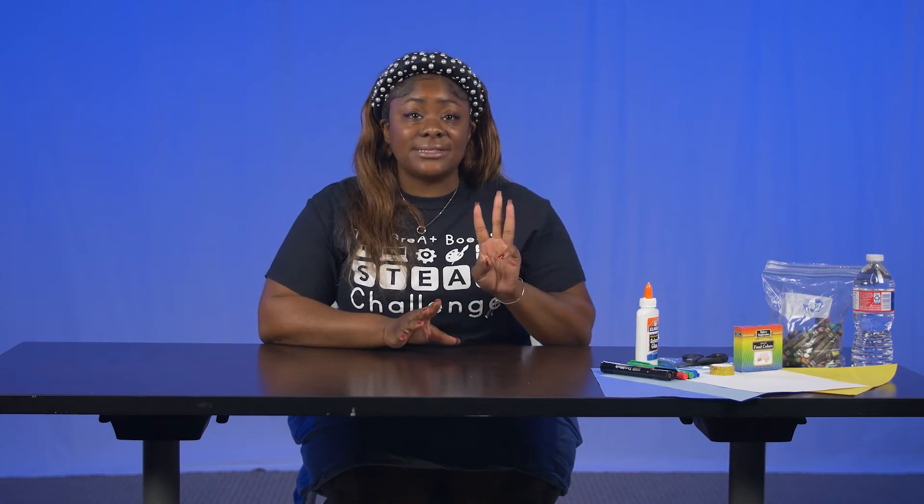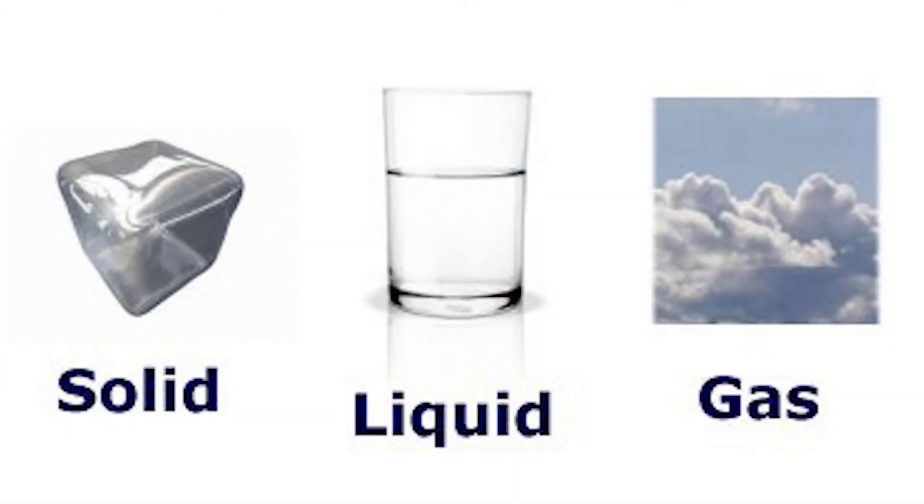That means the water in your sink, to the rain that falls down, to the water in the lakes and the oceans are all connected. Water exists in three states: solid, liquid, and gas. If these words are new to you, don't worry — we will go over these words soon. The water cycle has three main stages: evaporation, precipitation, and condensation.